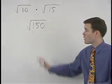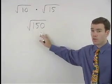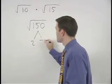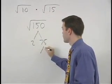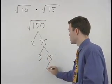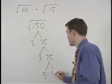Next, break down the square root that you end up with. 150 is 2 times 75, 75 is 3 times 25, and 25 is 5 times 5.